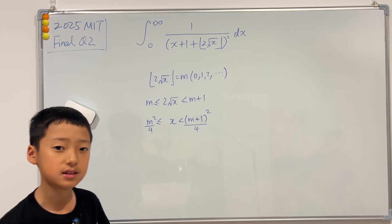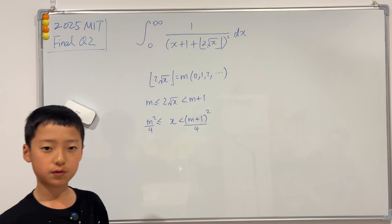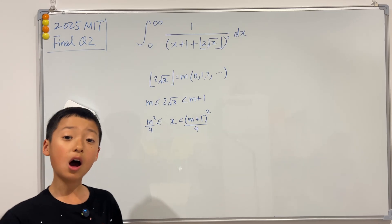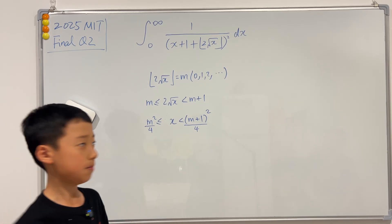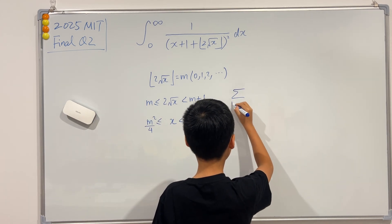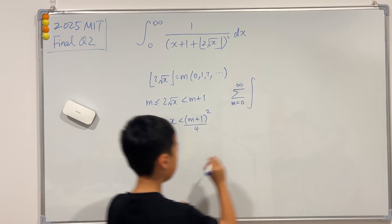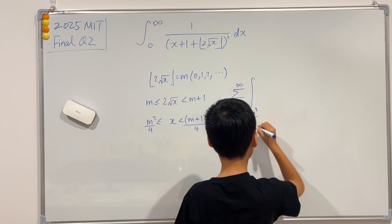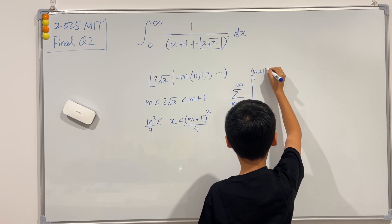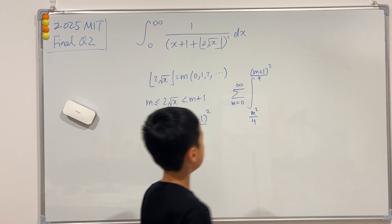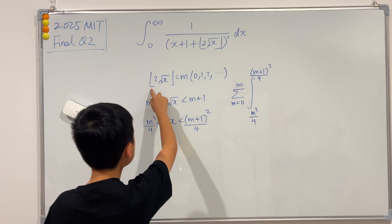To account for all of that space, we need to add a sum — summing all values from m ranging from 0 to infinity of the integral. We replace the bounds accordingly, so the lower bound is m²/4 and the upper bound is (m+1)²/4, and the integrand is of course just m (the floor function value on that interval).